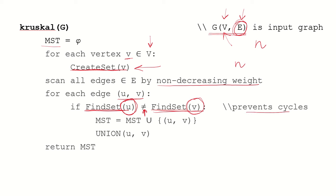Checking that the representative sets are not equal is what prevents cycles in the MST. If the sets are disjoint, we add this edge to the MST and then merge the two representative sets — taking a union of the set representing vertex U and the set representing vertex V. Finally, after processing all edges, we will have our final MST.